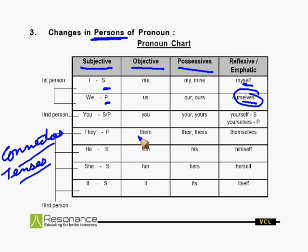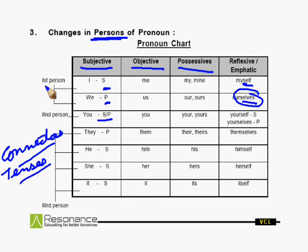This chart becomes equally important as far as change of persons is concerned. Just go through the chart very minutely. 'You' is both singular and plural. So, 'I' and 'we' become first person. 'You' becomes second person. And then 'they', 'he', 'she', and 'it' — they all become third person.